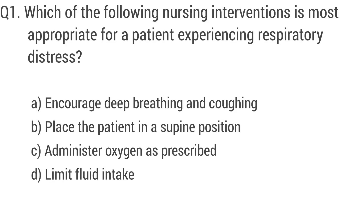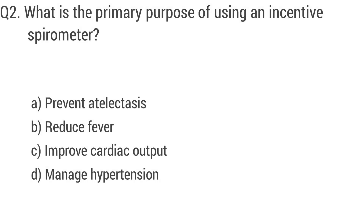Question 1: Which of the following nursing interventions is most appropriate for a patient experiencing respiratory distress? The right answer is option C: Administer oxygen as prescribed. Question 2: What is the primary purpose of using an incentive spirometer? The right answer is option A: Prevent atelectasis.